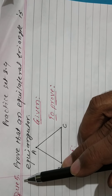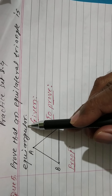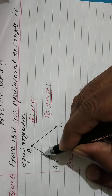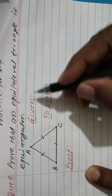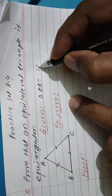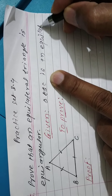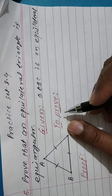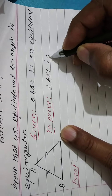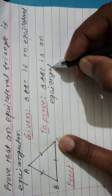Exercise 3.4, question number 5: prove that an equilateral triangle is equiangular. I draw triangle ABC which is an equilateral triangle. Given: triangle ABC is equilateral. What to prove? Triangle ABC is equiangular.